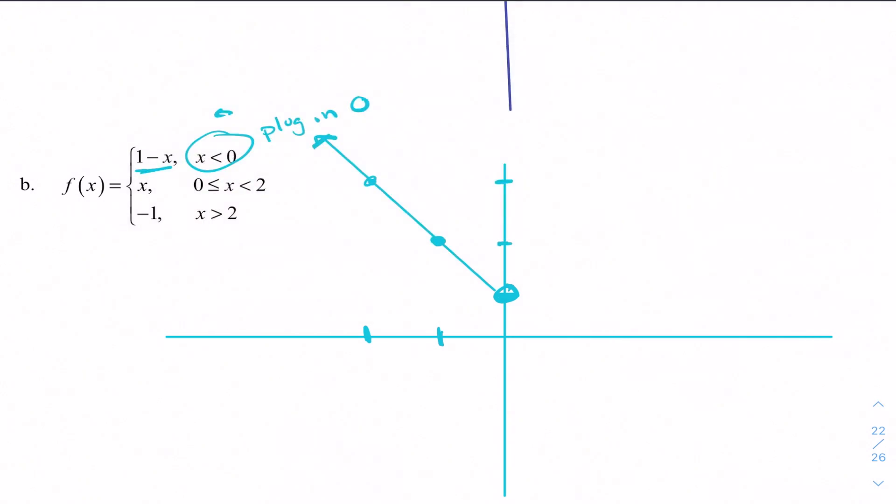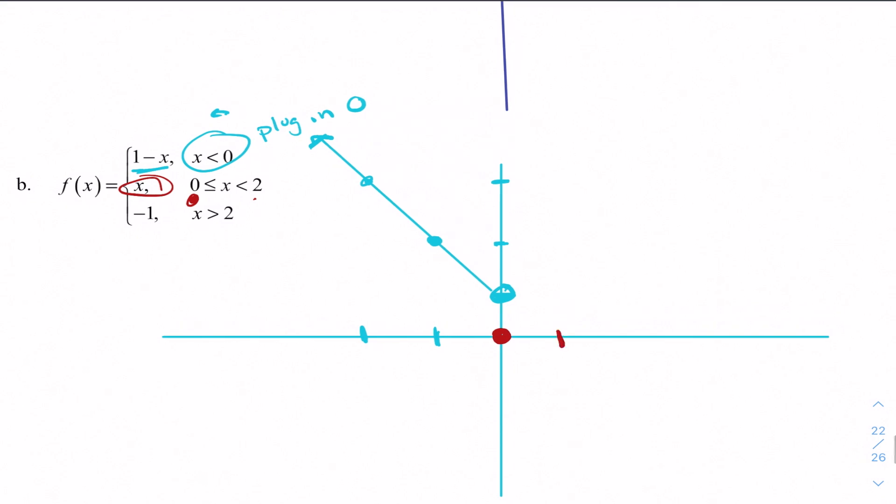For my second portion, I look like the graph x from 0 to 2. So I start with my lower value, plug in 0, I get 0. If I plug in 1, 2, I should get 2 out. Both of those are filled in circles because I can be those values. Sorry, I can be the first one. That's my mistake. I have an open circle at 2, 2 because I can't be 2.